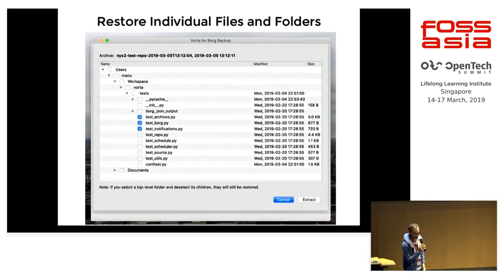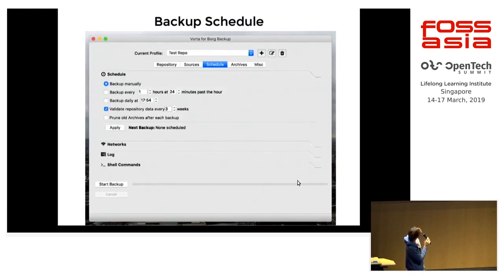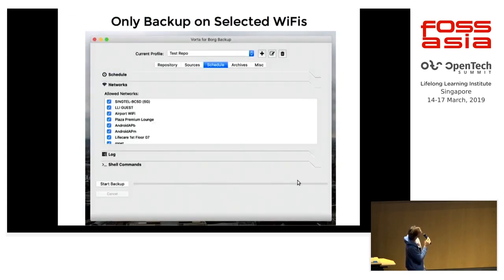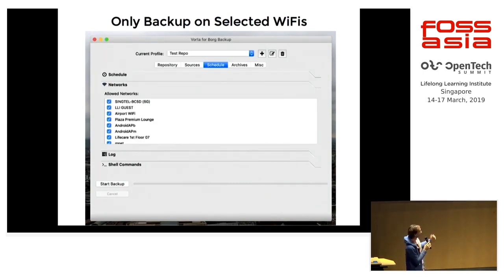When you want to browse or restore files, you can browse it as a tree. And you have a flexible schedule. With the open source community we're still thinking about features, and one of them is to choose which Wi-Fi you want to use for backups — maybe you don't want to use your phone's connection.